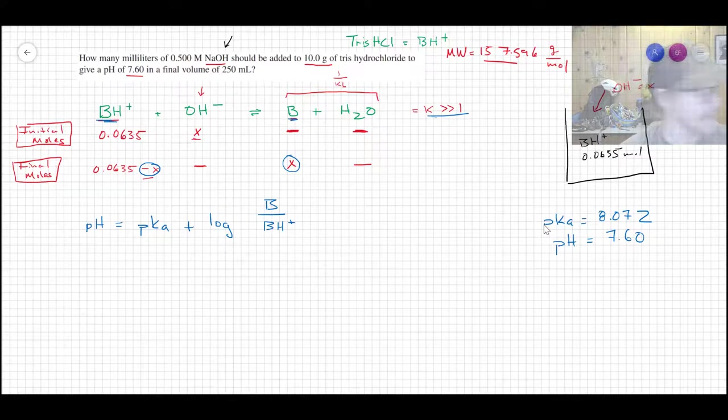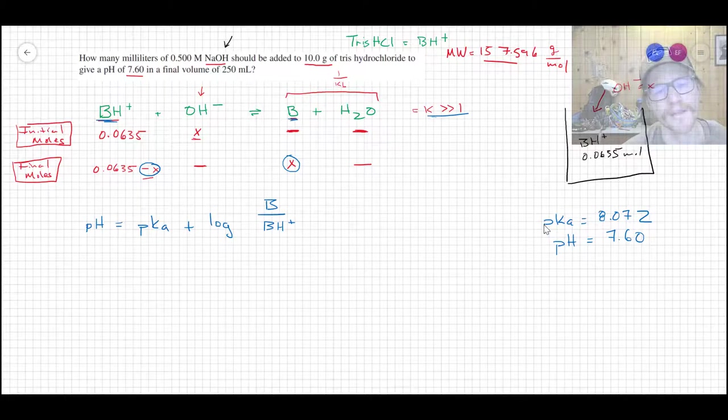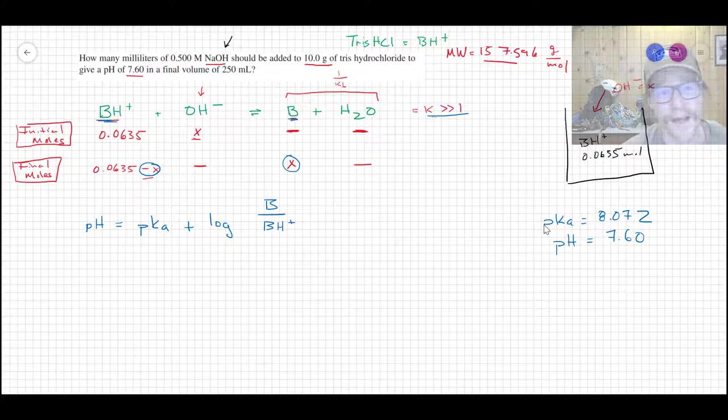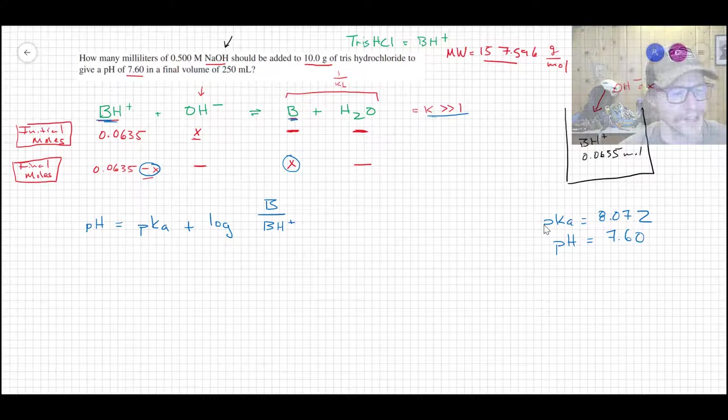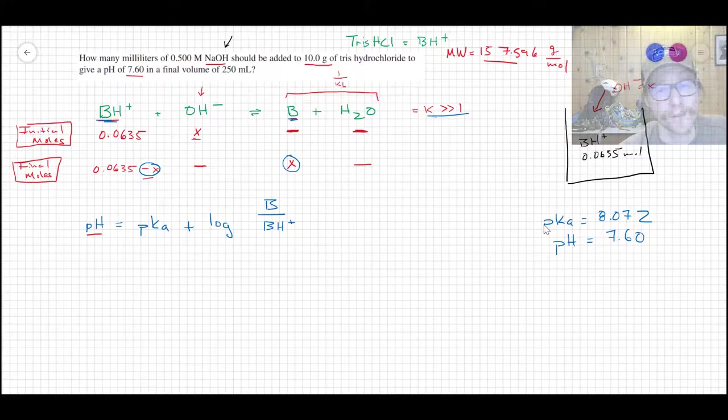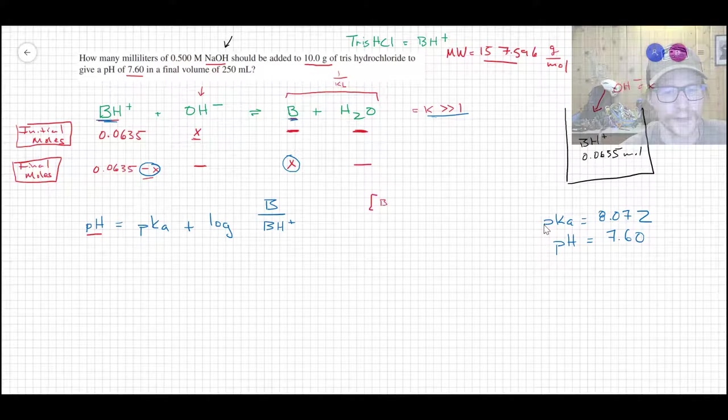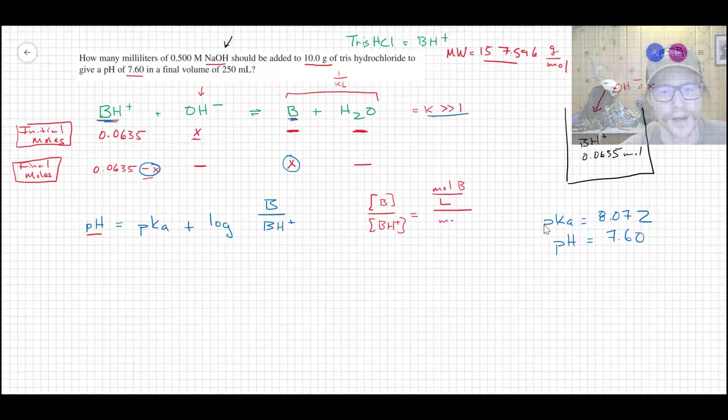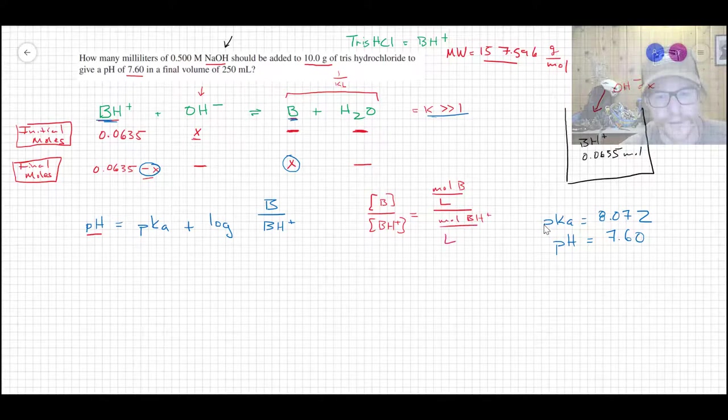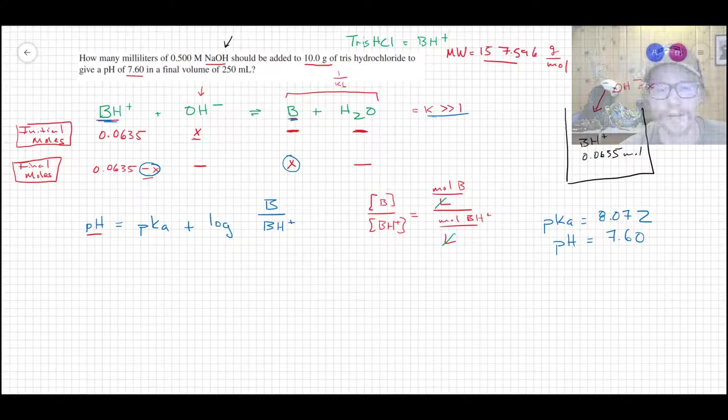And we have some values that we could input for B and BH+. Small sort of an aside here is that I have not placed B and BH+ in brackets because these do not need to be concentrations at this point. And this is actually an important distinction. When we're talking about buffers, the pH here that you compute using the Henderson-Hasselbalch equation is actually independent of volume.